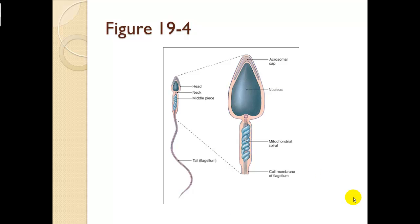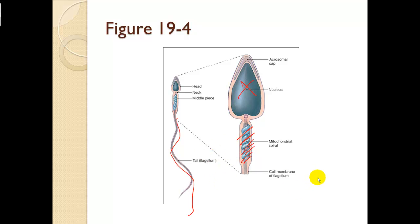This is a spermatozoon. Near where the tail starts is where the mitochondria, or energy production, is located. The nucleus is up front. The flagellum allows the sperm to be mobile — to swim or move in a solution.